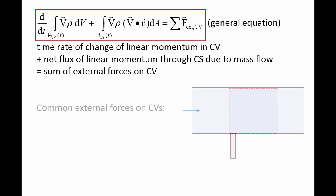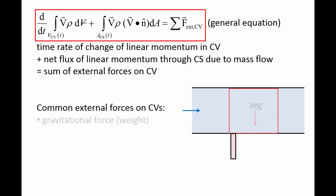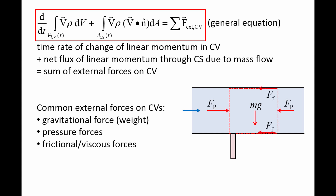There are many types of external forces that can act on a control volume. Here we have a pipe filled with a flowing fluid that is supported by a post. The control surface is marked by red dashed lines. Some common forces that you will encounter when solving linear momentum problems are body forces such as weight, and surface forces such as pressure forces, frictional or viscous forces, and reaction or anchoring forces.